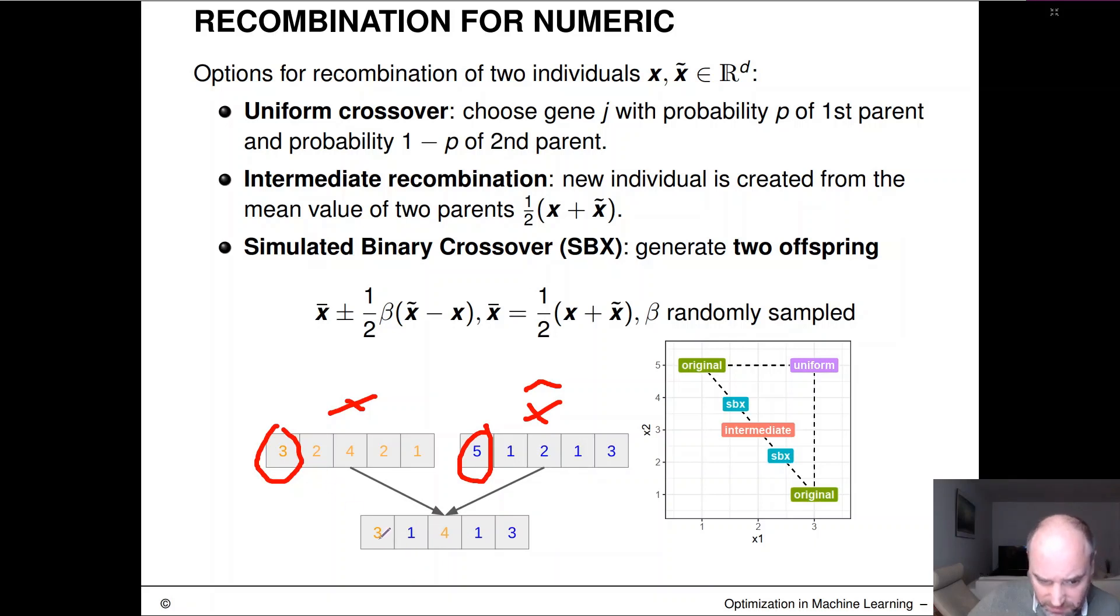And then here in this resulting offspring in this instance, this guy would have been chosen from the left parent. Here we would have chosen that guy from the right parent, from the left again, and then from the right and from the right. This is a simple vanilla form of crossing over these two vectors of real numbers.